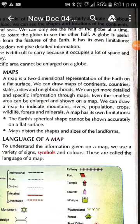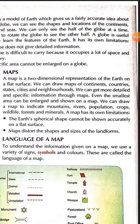We can get more detailed and specific information through maps. On a map, we can draw on a flat surface any continent, country, city or neighbourhood. Even the smallest area can be enlarged and shown on a map. We can draw a map to indicate mountains, rivers, population, crops, wildlife, forest and minerals.